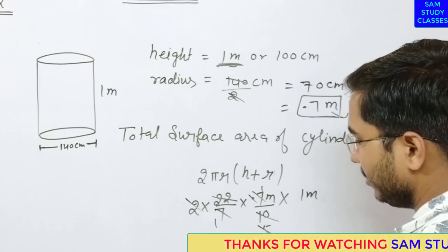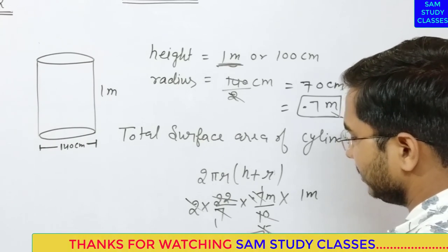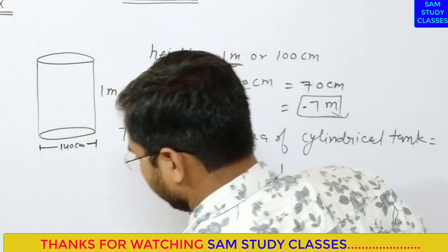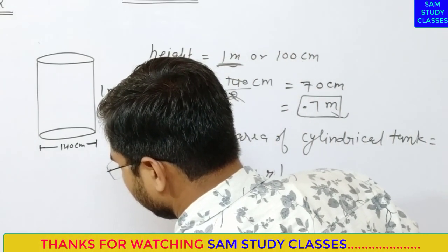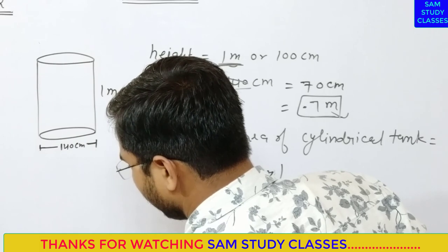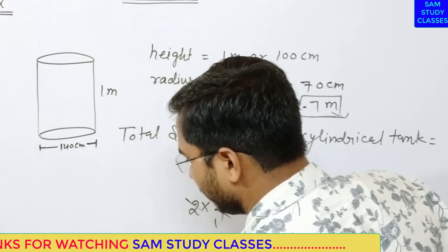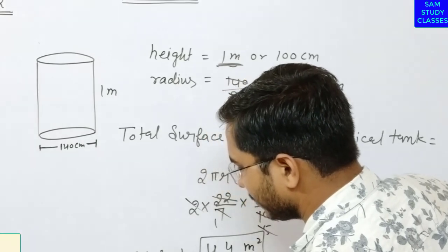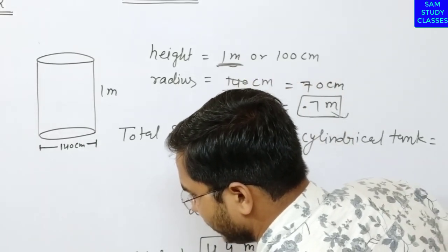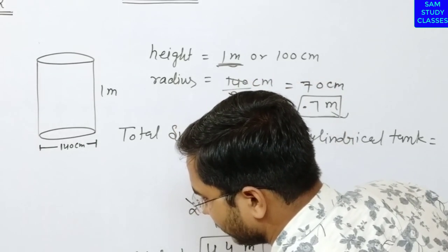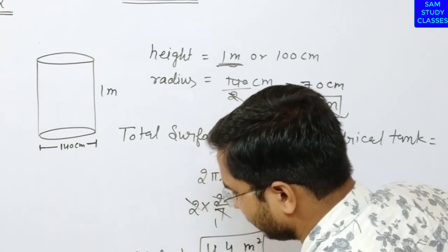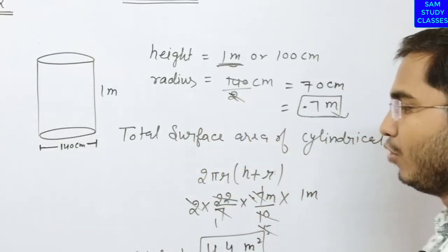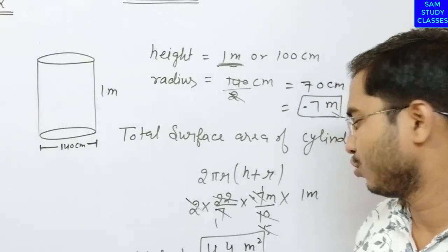This is in meter square. How much is the sheet requirement? The metal sheet required to make the tank is equal to 4.4 meter square.